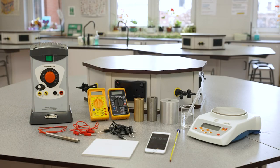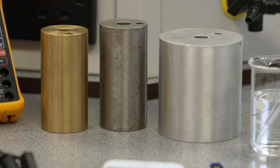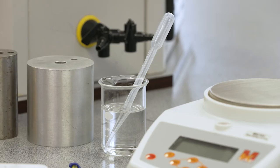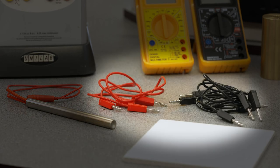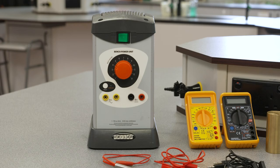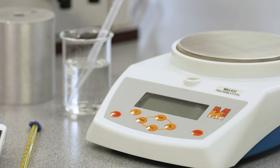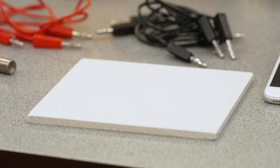For this experiment we'll be using the following equipment: calorimeter blocks—we're using brass, mild steel and aluminium—a thermometer, stopwatch, 3 milliliter pipettes, an immersion heater, 4 millimeter connecting leads, a bench power supply—today we're using the Unilab space saver bench power unit—an ammeter, a voltmeter, a two decimal place balance, and a heatproof mat.